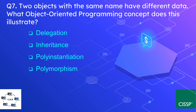Question number 7: Two objects with the same name may have different data. What object-oriented programming concept does this illustrate? The options are delegation, inheritance, polyinstantiation, or polymorphism. The correct option is polyinstantiation.